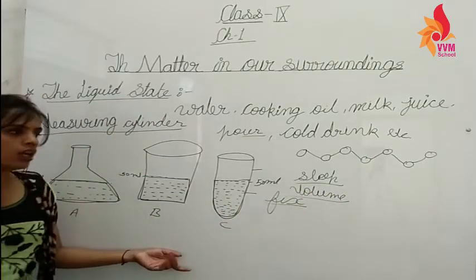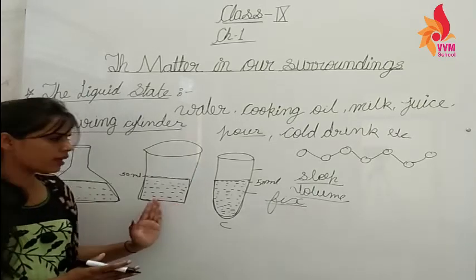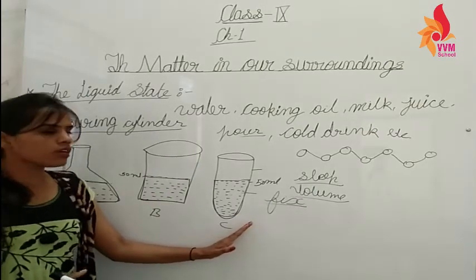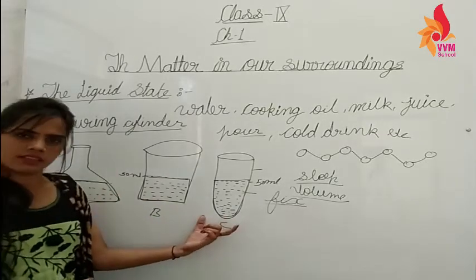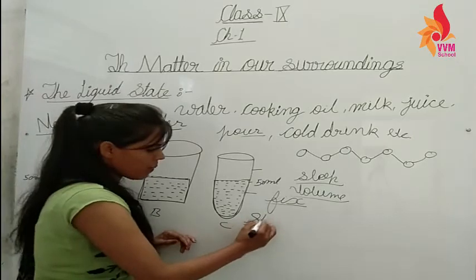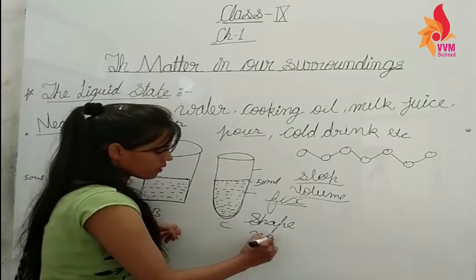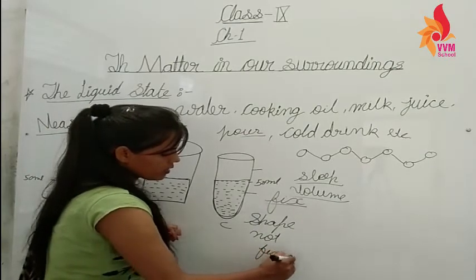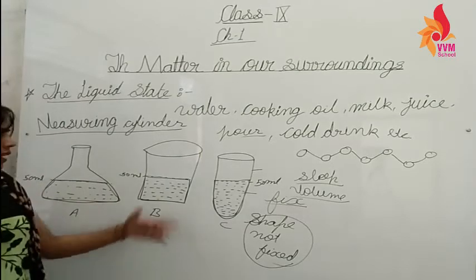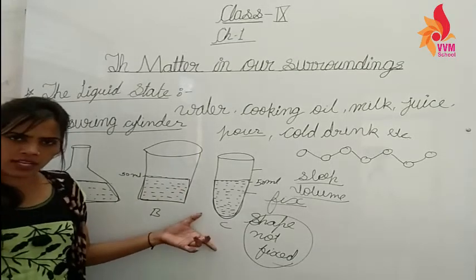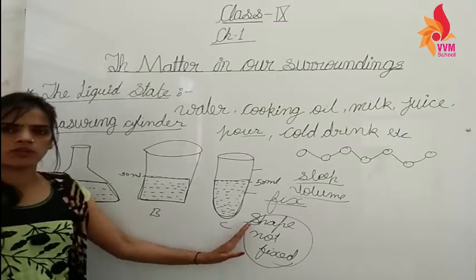We can confirm this because we took liquid in one container and it was 50 ml, the next container was 50 ml, and the next container was also 50 ml. But the shape changed in each container — this shape, then that shape, then another shape. So the shape is not fixed, but the volume is fixed at 50 ml.